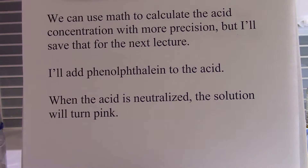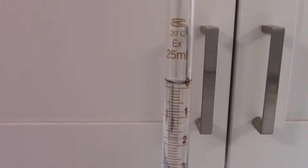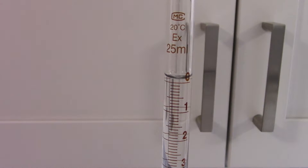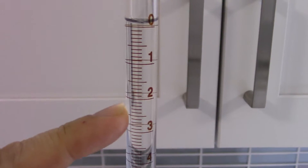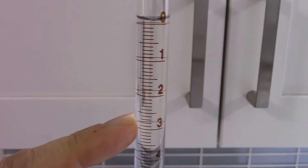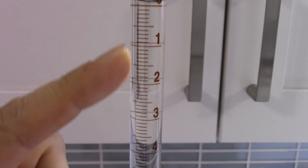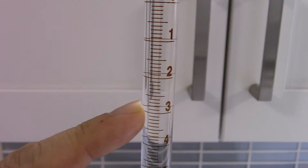The liquid has been poured into the burette until it reaches the zero level. This level is going to come down as we add sodium hydroxide. So if it comes down to three, it means we've added three milliliters of base solution, and so on.